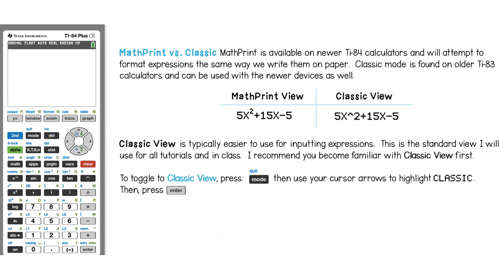The different generations of TI calculators are capable of outputting mathematical notation using what is called MathPrint and also the classic view. MathPrint is available on the newer calculators and it attempts to format expressions the same way that we write them on paper.